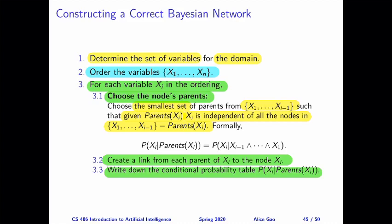Formally, if we are calculating the probability of Xi — the current node we're trying to add — then conditioning on the parents of Xi is the same as conditioning on all the existing nodes inside the Bayesian network. In the extreme cases, the set of parents could be empty, meaning this node does not depend on any existing node. Or the set of parents could be all of the existing nodes, meaning the new node depends on every node already added to the network.